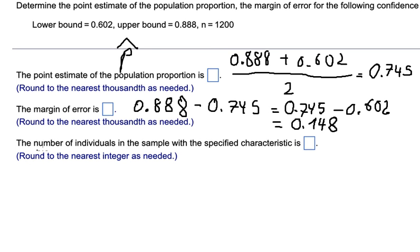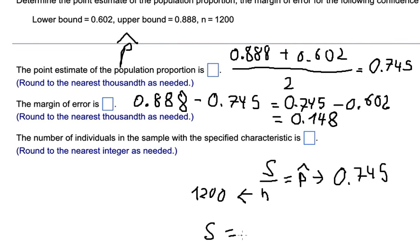And the last one, the number of individuals in the sample with the specified characteristics. So we know that we have S over N equal to P. So we know that N is about 1200, this number in here we just calculated. So to find S, we have 1200 times 0.745 and we got the final answer, that's about 894.